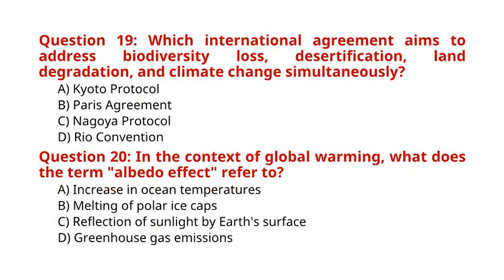Question 19: Which international agreement aims to address biodiversity loss, desertification, land degradation, and climate change simultaneously? A. Kyoto Protocol. B. Paris Agreement. C. Nagoya Protocol. D. Rio Convention. The correct answer to Question 19 is option D: Rio Convention. Question 20: In the context of global warming, what does the term 'albedo effect' refer to? A. Increase in ocean temperatures. B. Melting of polar ice caps. C. Reflection of sunlight by Earth's surface. D. Greenhouse gas emissions. The correct answer to Question 20 is option C: Reflection of sunlight by Earth's surface.